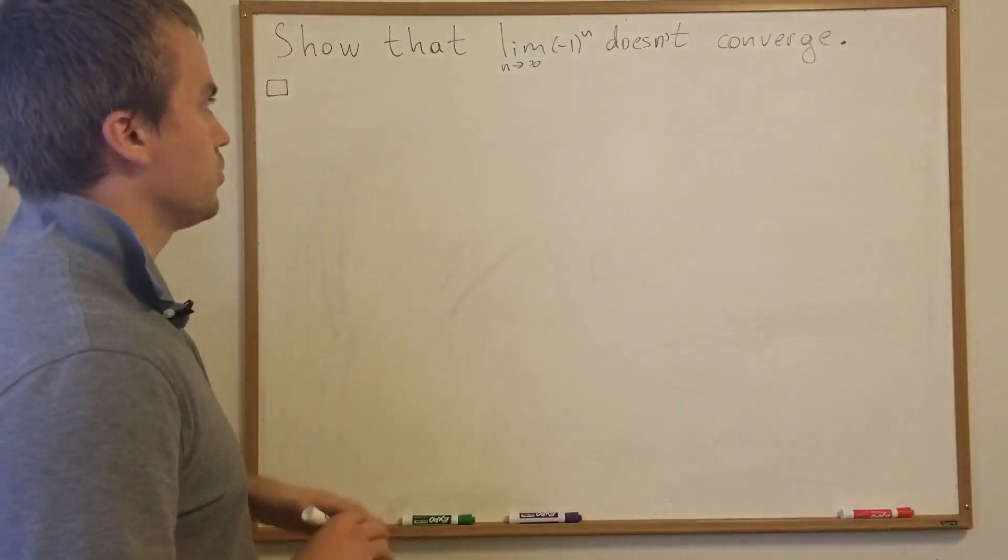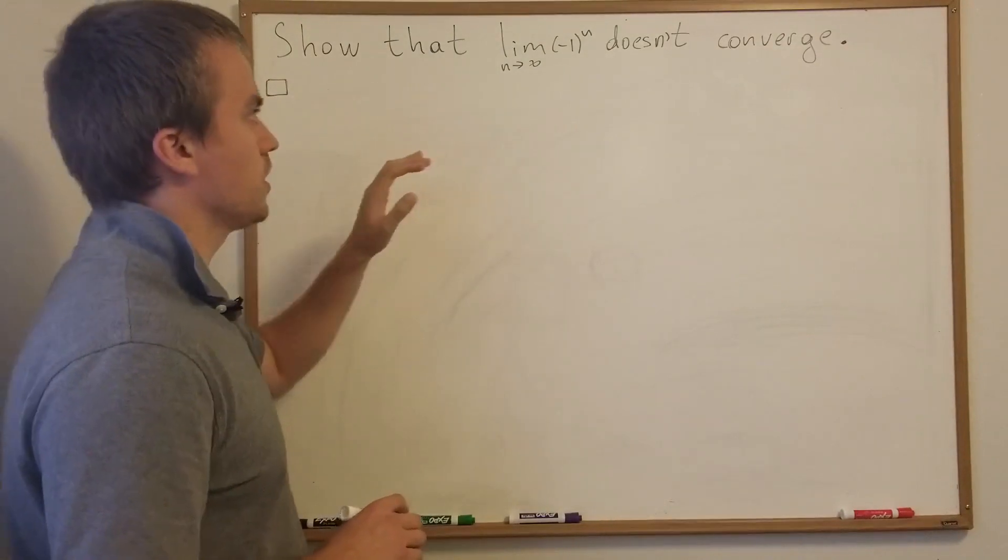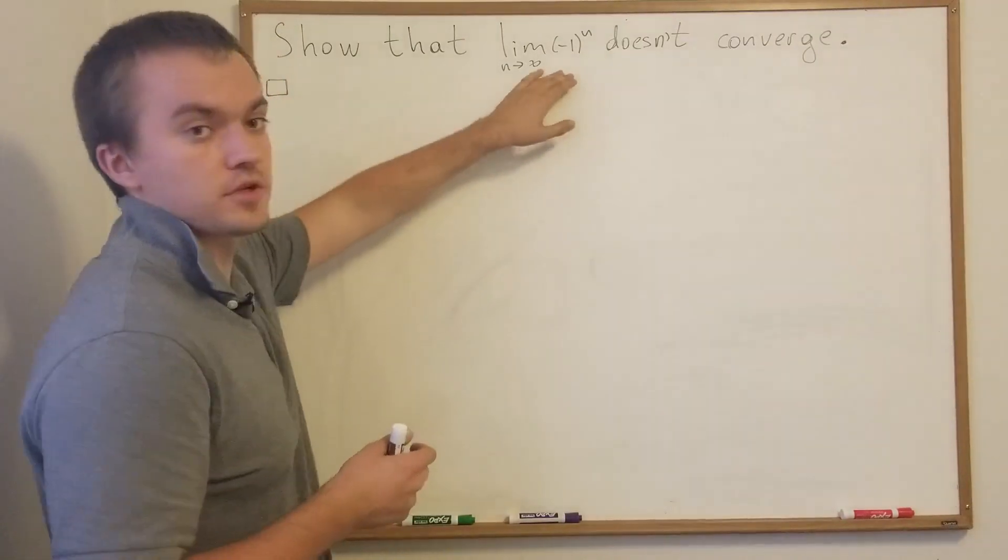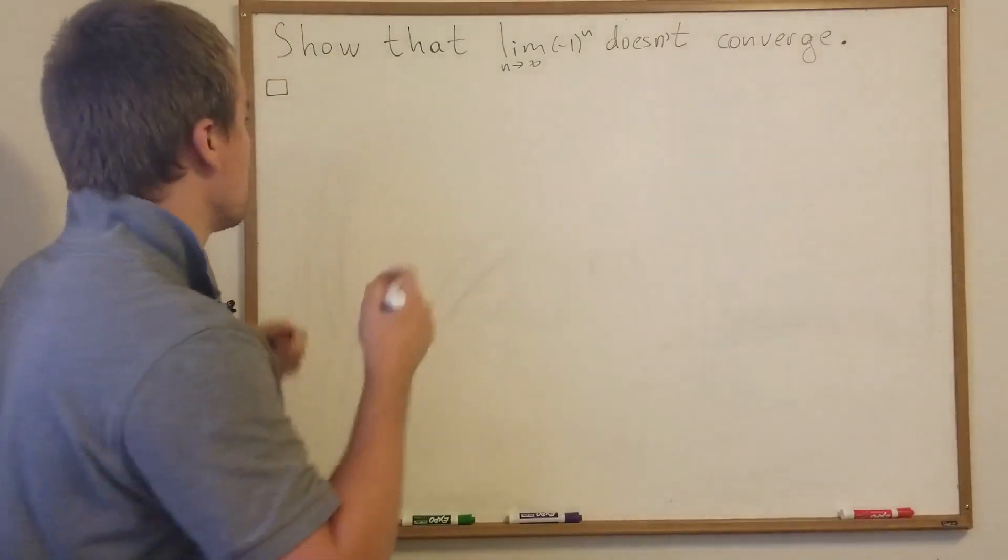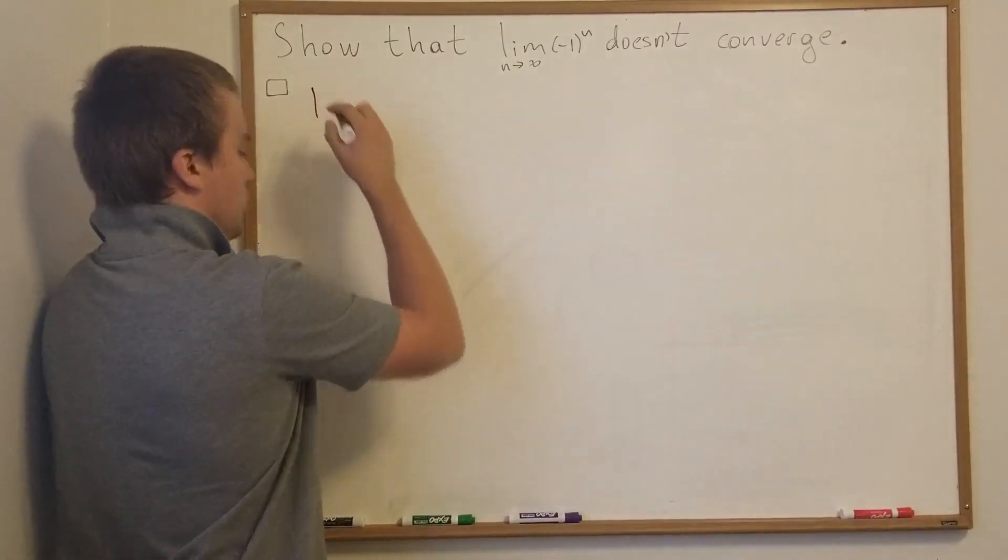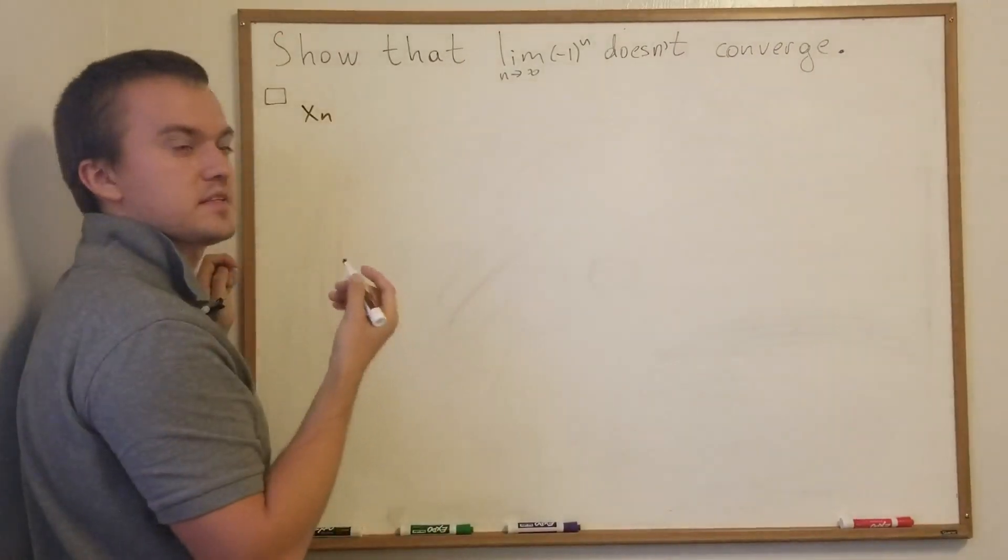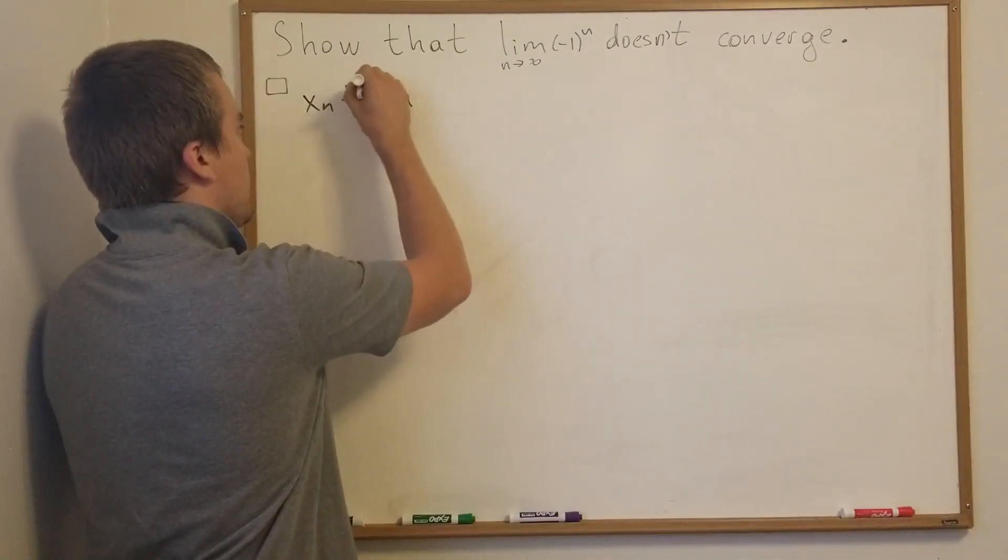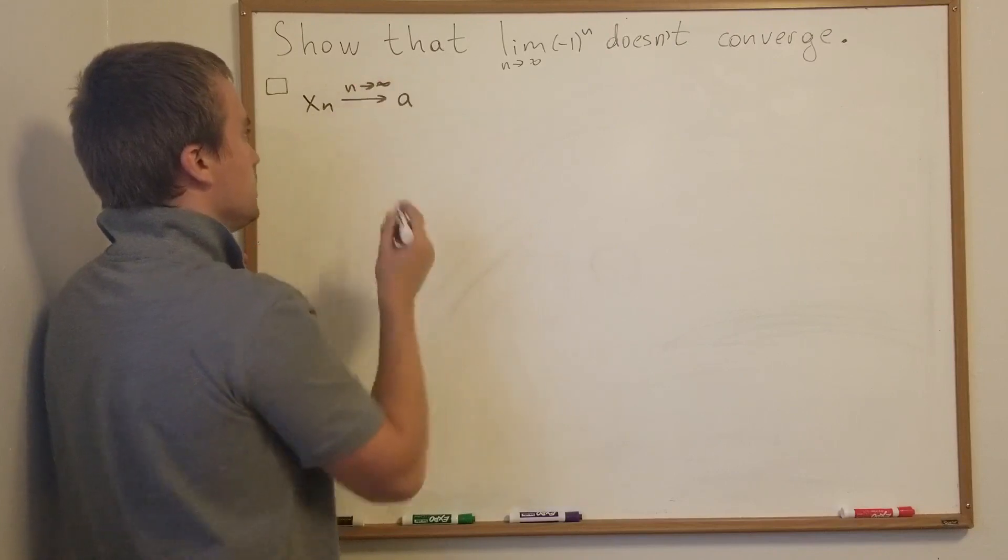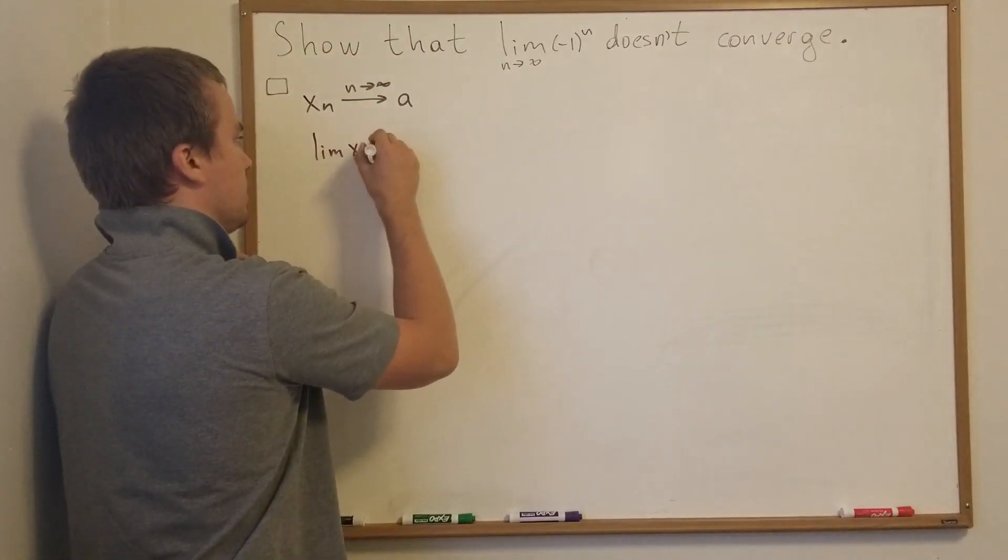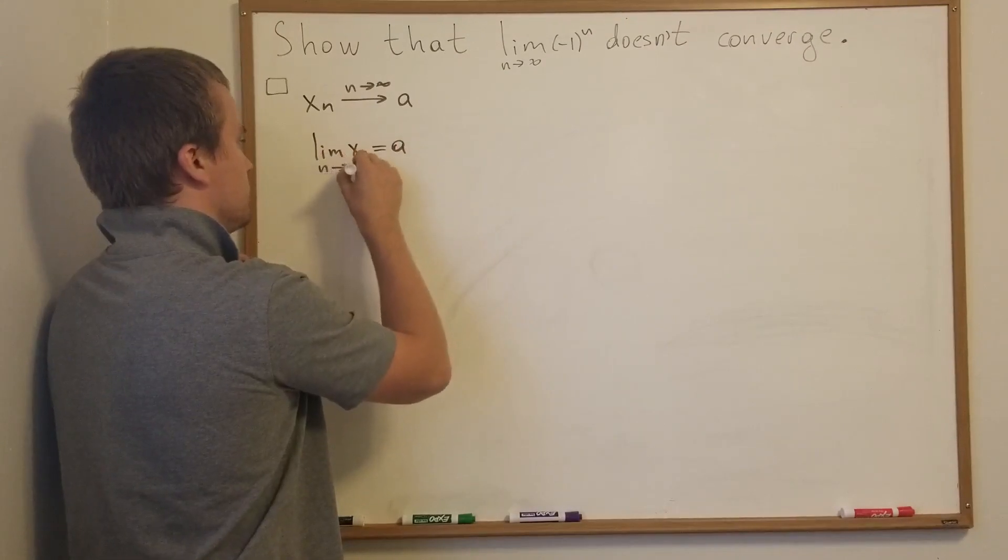I'm going to use in this proof the regular definition that a sequence converges. So let's recover that definition. We're saying that if we're given a sequence xn, this sequence xn converges to some value a where n goes to infinity, or in other words, the limit of xn equals a where n goes to infinity.